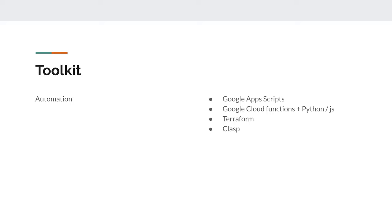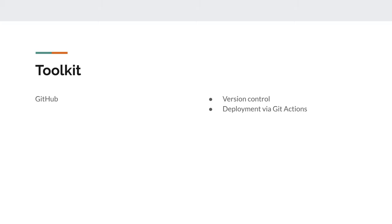This way you have version history — there won't be a situation where somebody changed something and another person didn't know, leading to different numbers. And if you have mistakes in your code, you can easily restore the previous version. GitHub is used for version control and deployment with GitHub Actions.